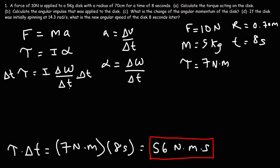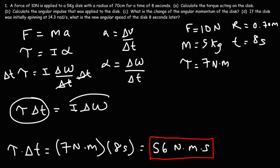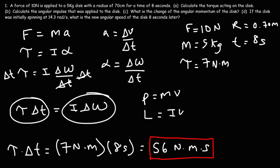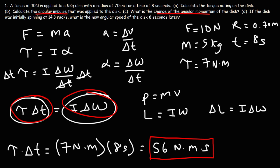Replacing alpha with delta omega divided by delta t, and multiplying both sides by delta t, we get that the torque multiplied by time equals inertia multiplied by the change in angular speed. In other words, angular impulse equals the change in angular momentum — since momentum is mass times velocity, angular momentum is inertia times angular velocity. So the answer for part C is the same as part B: the angular impulse equals the change in angular momentum, which is 56 newton meter seconds.